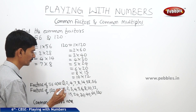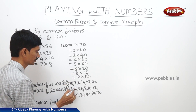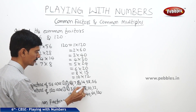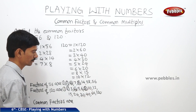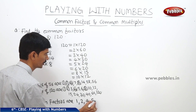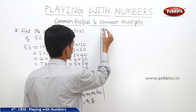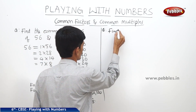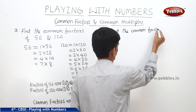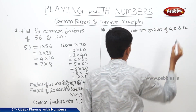Now the common factors are: 1 is the common factor, 2 is the common factor, 4 is the common factor, and 8 is also the common factor. There is no other common factor. So the common factors of 56 and 120 are 1, 2, 4 and 8.